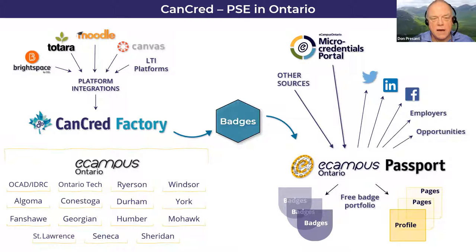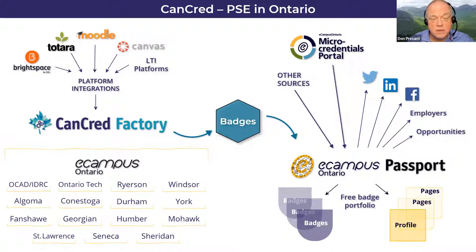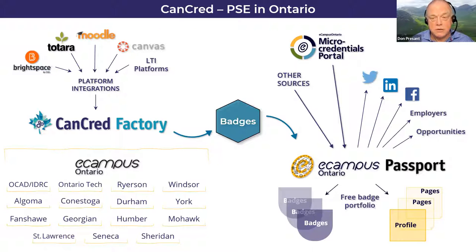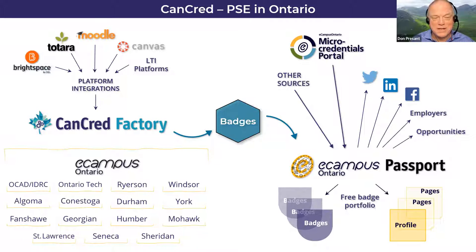Today, we'll show you how eCampus Ontario Passport is an effective badge wallet and even a great badge portfolio. Eric and I will be using the word 'badges' as a short form for digital open badges, the Mozilla standard. That can include formal for-credit micro-credentials, non-credit micro-credentials, industry credentials like the IBM ones, and even informal badges. We see open badges as the container and credentials as the content.